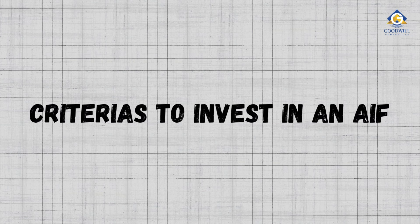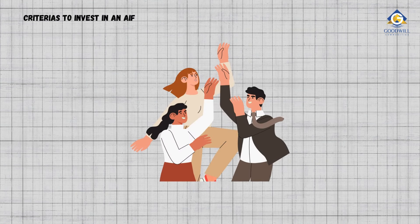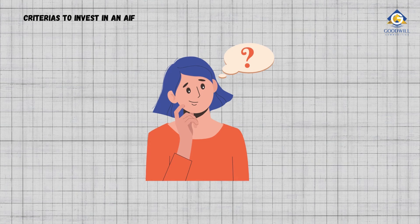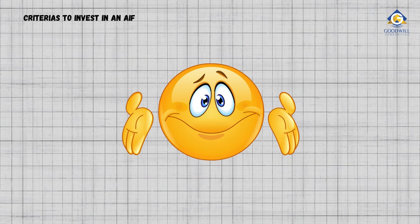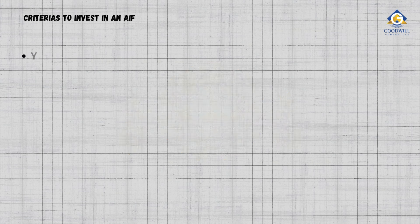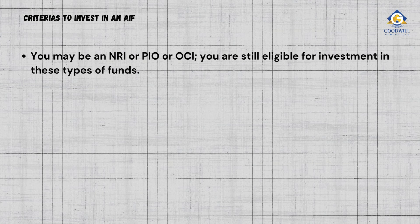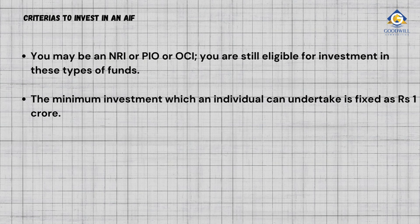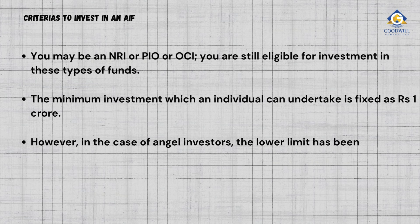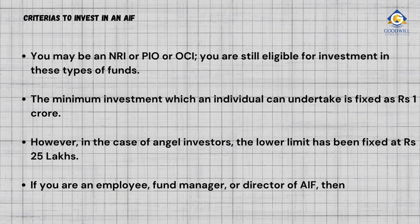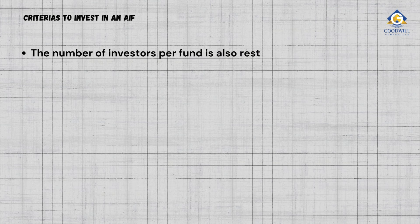Regarding the criteria to invest in an AIF: NRIs, PIOs, and OCIs are eligible for investment in these types of funds. The minimum investment an individual can undertake is fixed at 1 crore rupees. However, in the case of angel investors, the lower limit is fixed at 25 lakhs rupees. If you are an employee, fund manager, or director of an AIF, the minimum limit is again 25 lakhs rupees. The number of investors per fund is also restricted.